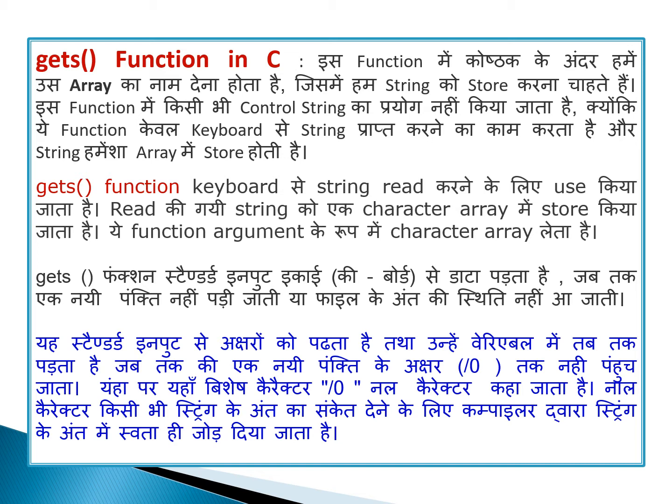The gets function reads data from standard input (keyboard) until a new line is encountered, or end of file is reached. It reads into a variable until the newline or null character '\0' is reached. The '\0' is a special character called the null character, which marks the end of any string. The compiler automatically appends '\0' at the end of a string so that the computer and compiler know that the string has ended.